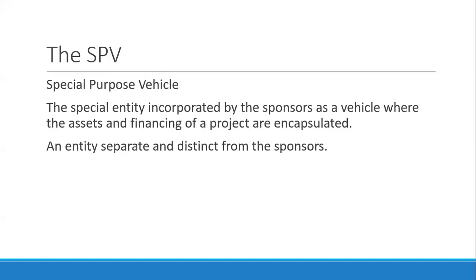The SPV, or special purpose vehicle, is the entity where the assets and financing of a project are encapsulated. It is a separate and distinct entity from sponsors. The objective of putting a project in an SPV is to limit the risk of the project within the entity and to isolate risks, using the SPV as a way to allocate risk between different parties.